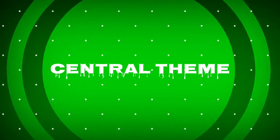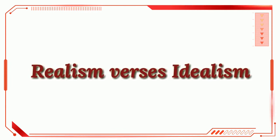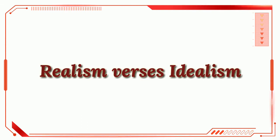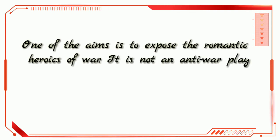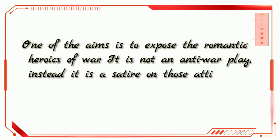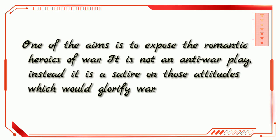The central theme of Arms and the Man is realism versus idealism, which is as relevant today as when the play was first performed in the 1890s. One of Shaw's aims in this play is to expose the romantic heroics of war — he wanted to present a realistic account of war and remove all pretensions of nobility from it. It is not, however, an anti-war play. Instead, it is a satire on those attitudes which would glorify war.